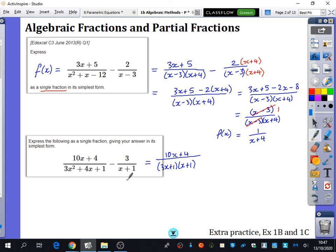And we're going to subtract 3 over x plus 1 here. So I'm going to multiply this second fraction by 3x plus 1 on the numerator and the denominator. And then I'm going to combine them. So that's 10x plus 4 minus 3 times 3x plus 1, all over 3x plus 1, x plus 1.